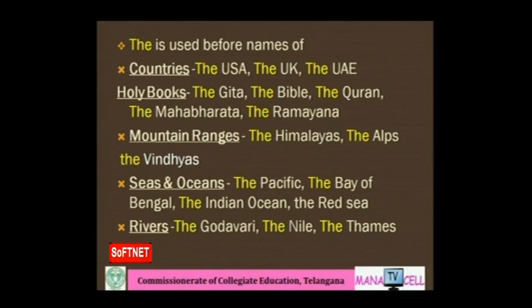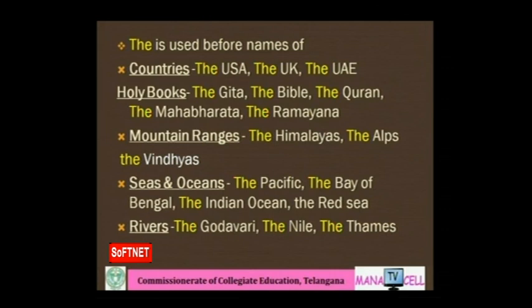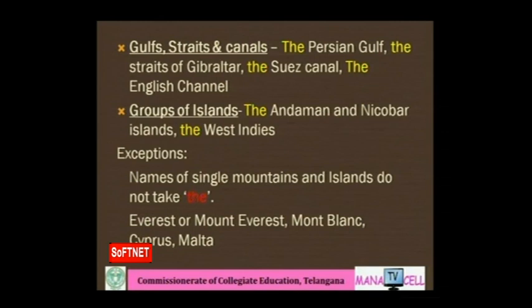'The' is used before names of countries like the USA, the UK, the UAE. It is also used before holy books or mythological texts: the Gita, the Bible, the Quran, the Mahabharata, the Ramayana. It is used before mountain ranges: the Himalayas, the Alps, the Vindhyas. It is used before names of seas and oceans: the Pacific Ocean, the Bay of Bengal, the Indian Ocean, the Red Sea. And before names of rivers: the Godavari, the Nile, the Thames, the Krishna, the Ganges.